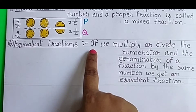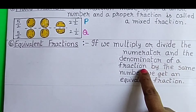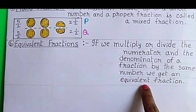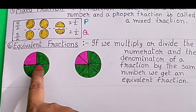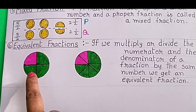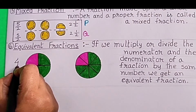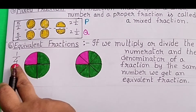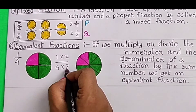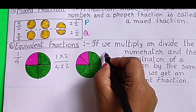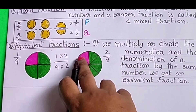Equivalent Fractions: If we multiply or divide the numerator and the denominator of a fraction by the same number, we get an equivalent fraction. For example, there are 2 circles of the same size. If we divide the first circle in quarters, then we get the fraction for 1 part is 1 by 4. Now, if we multiply the numerator and the denominator with 2, then we will get our new fraction 2 by 8. The fractions 1 by 4 and 2 by 8 have the same value. These are equivalent fractions.